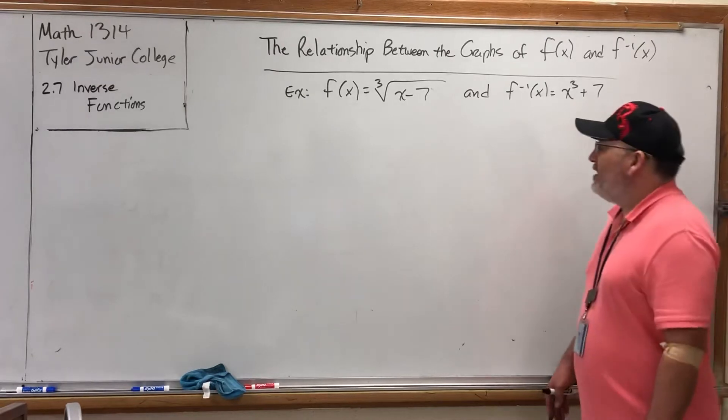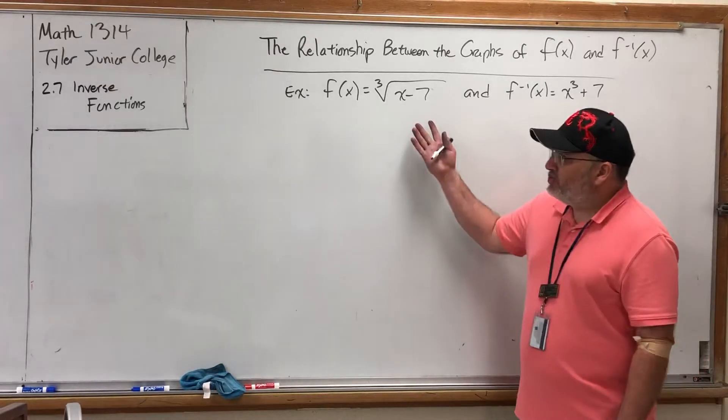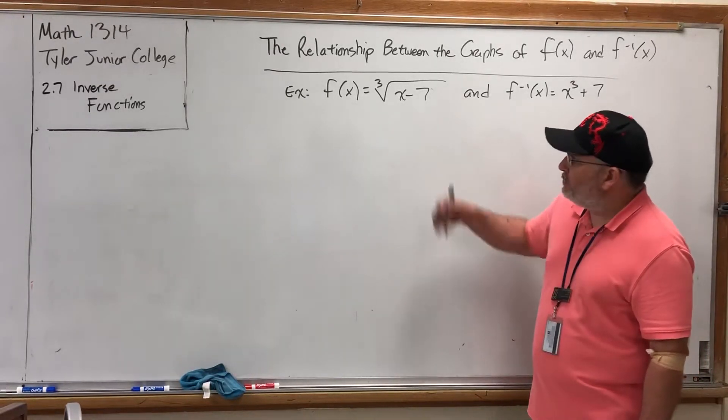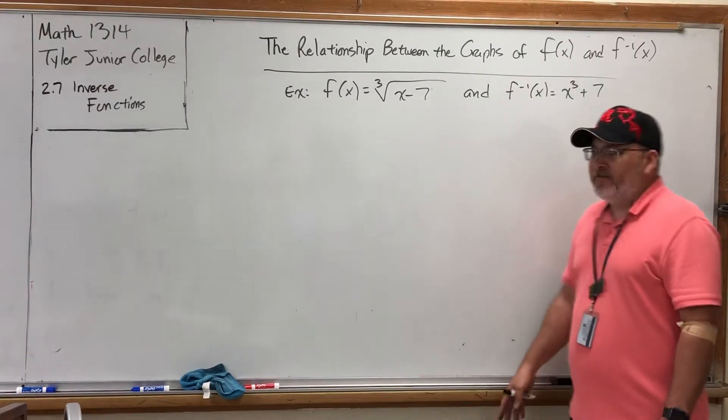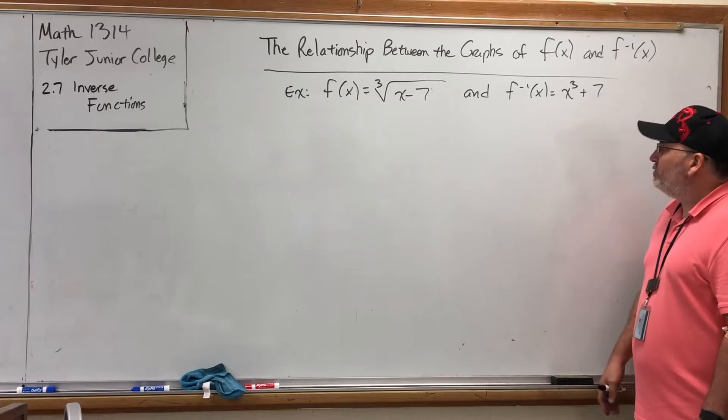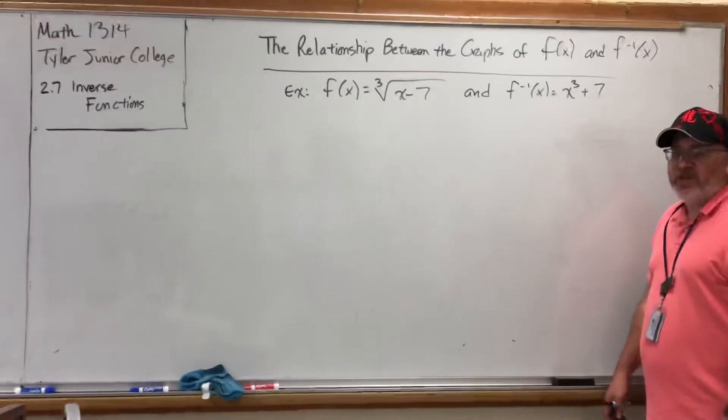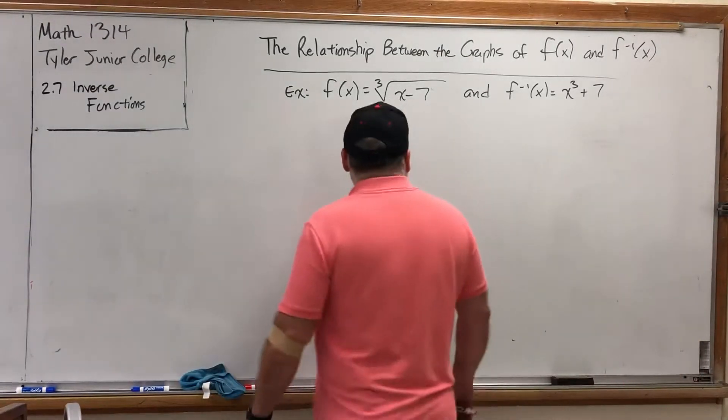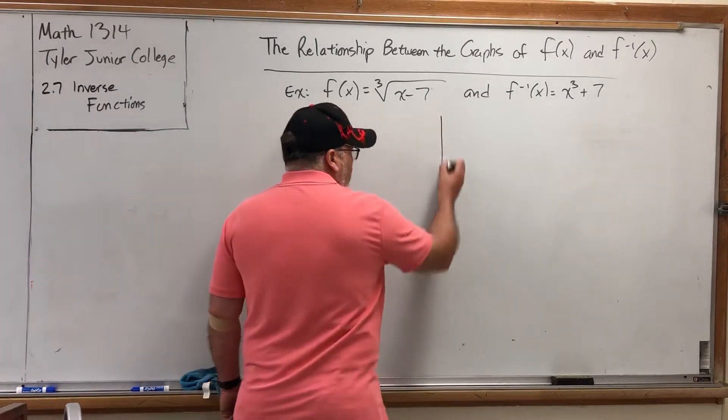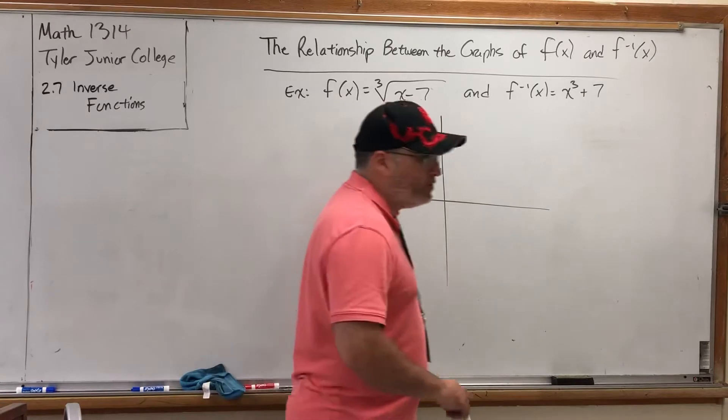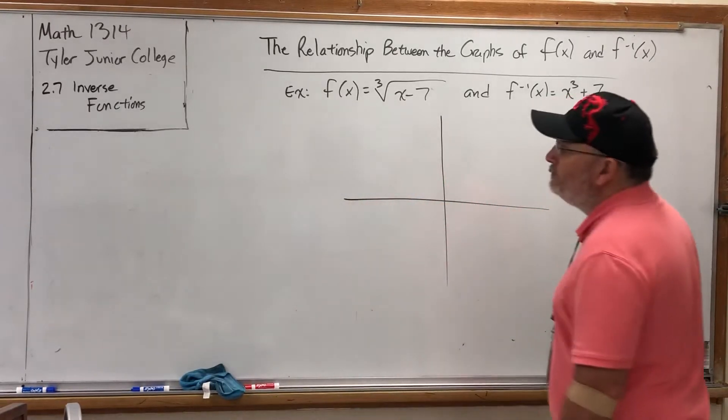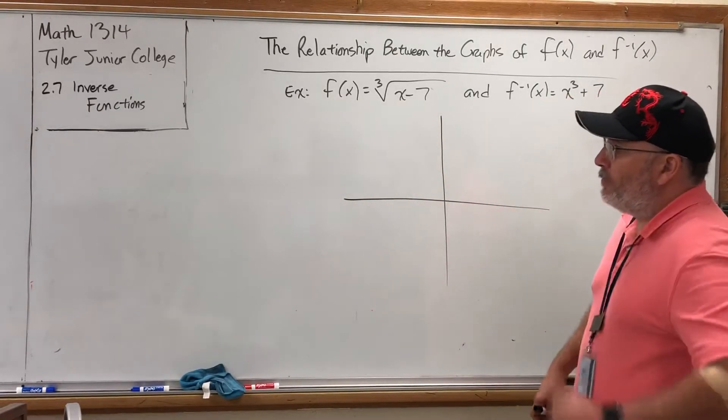On the board, you'll notice that we have a function whose inverse we found two videos ago. f(x) was equal to the cube root of x minus 7, and its inverse, f inverse of x, equals x to the third power plus 7. Both of these graphs are pretty easy to sketch because both of them are based on common graphs discussed in video one of the previous series.